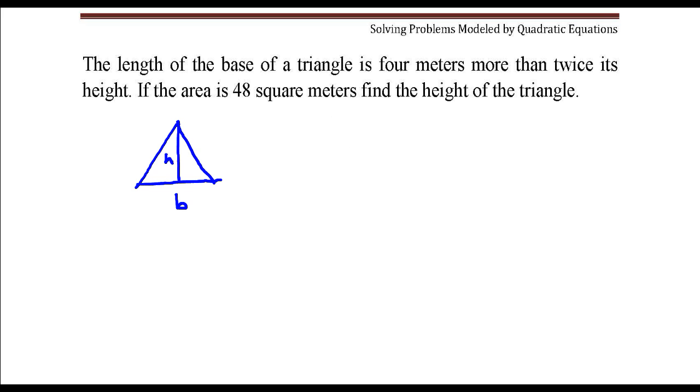The information in this problem says that the length of the base of the triangle is 4 meters more than twice its height, so the base is 4 meters more than 2 times its height. It also says that the area of this triangle is 48 square meters.